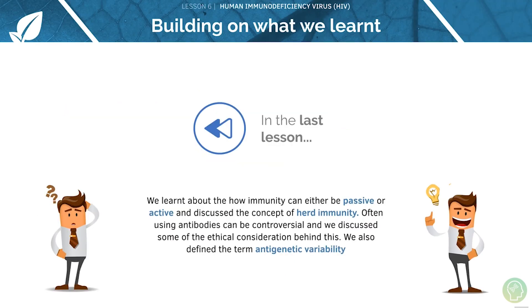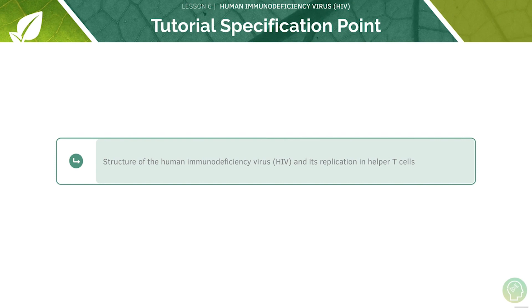In the last lesson we looked at the types of immunity. Here is the AQA specification point for today's lesson — we'll be looking at the structure of HIV and its replication.